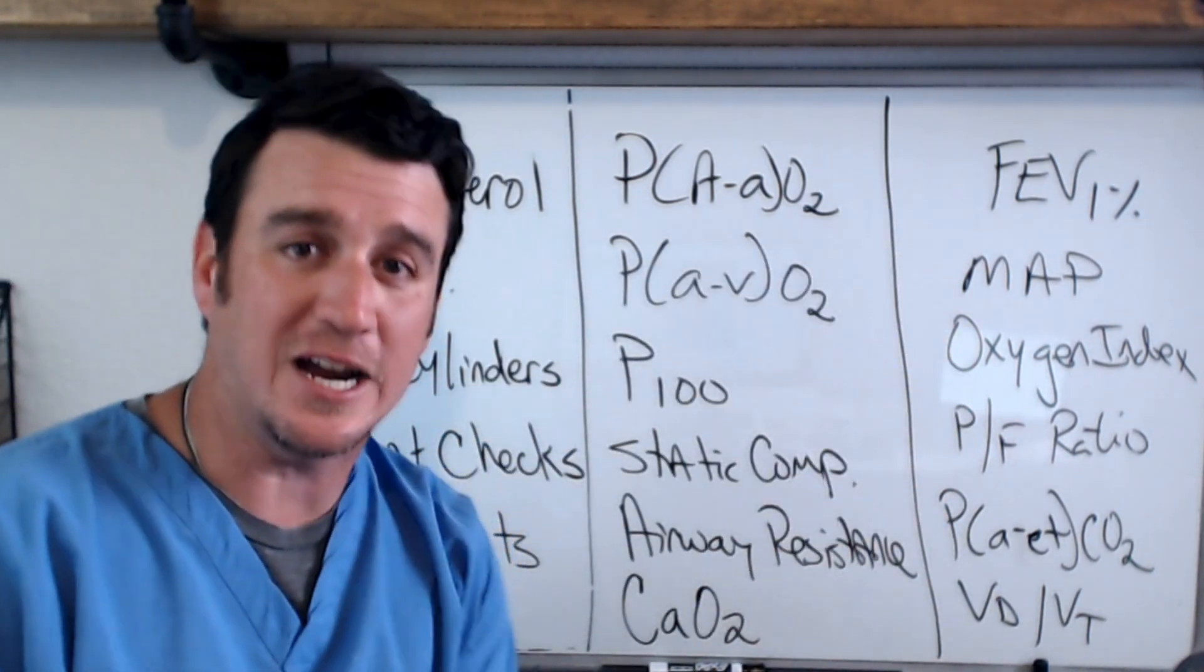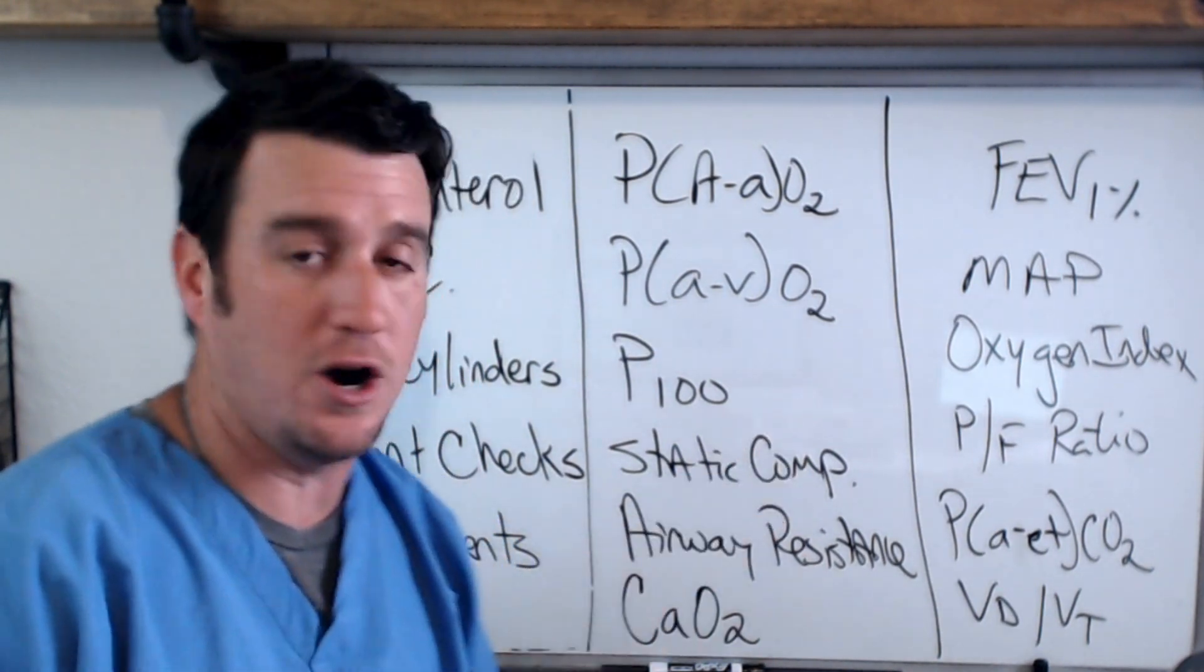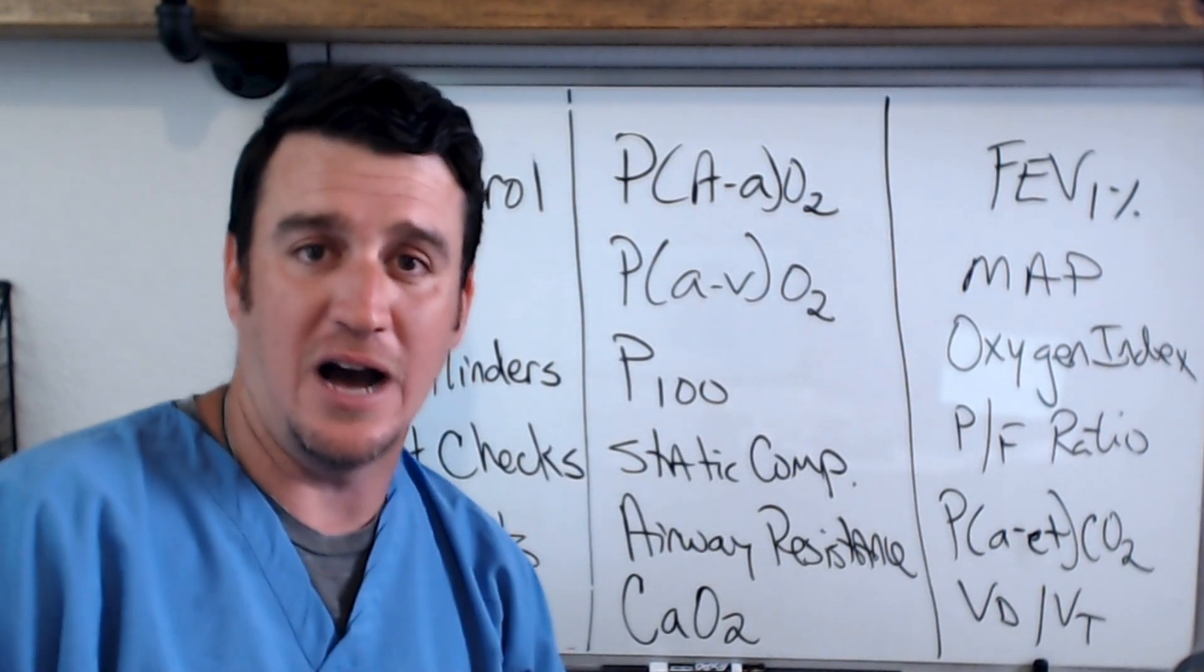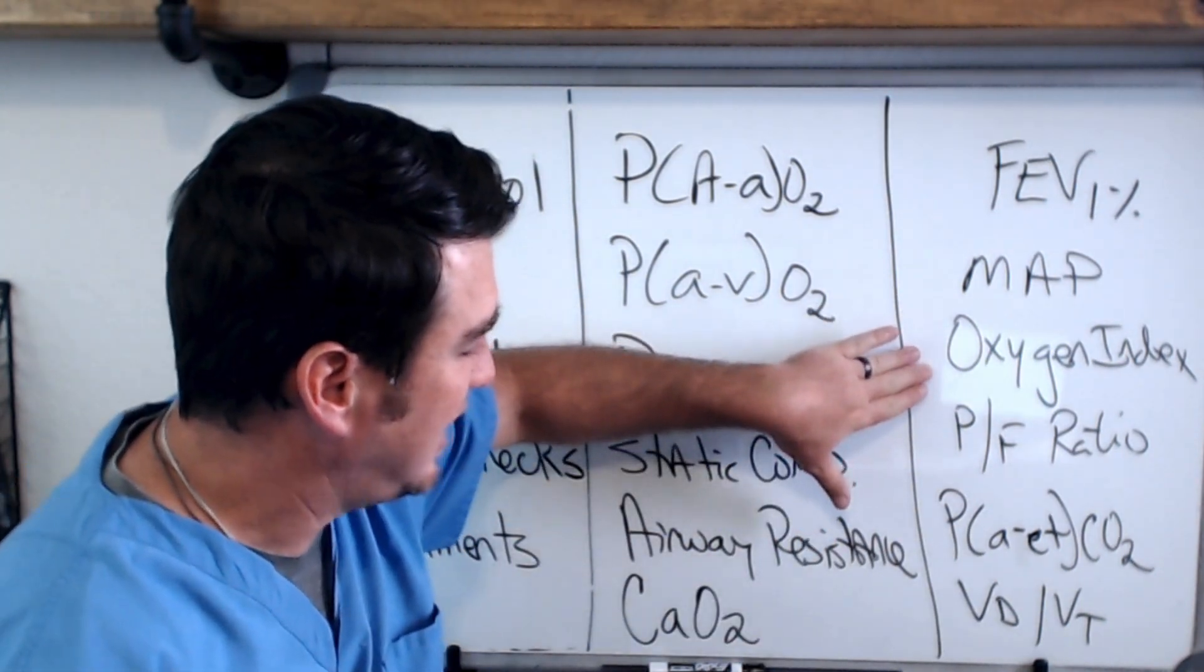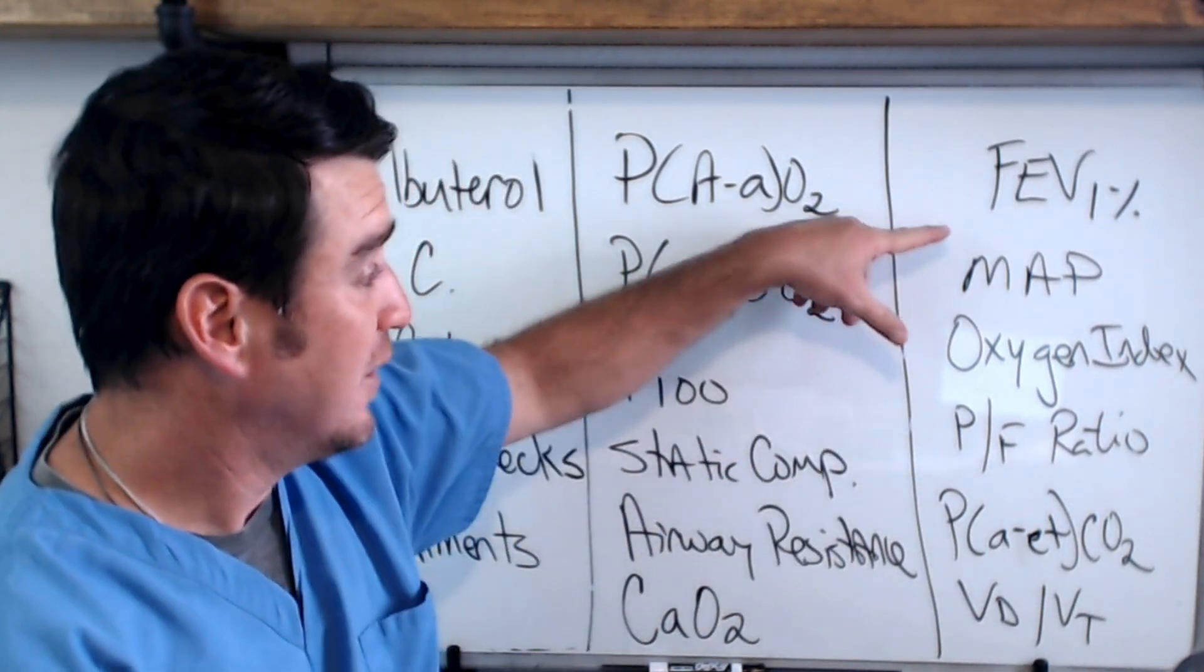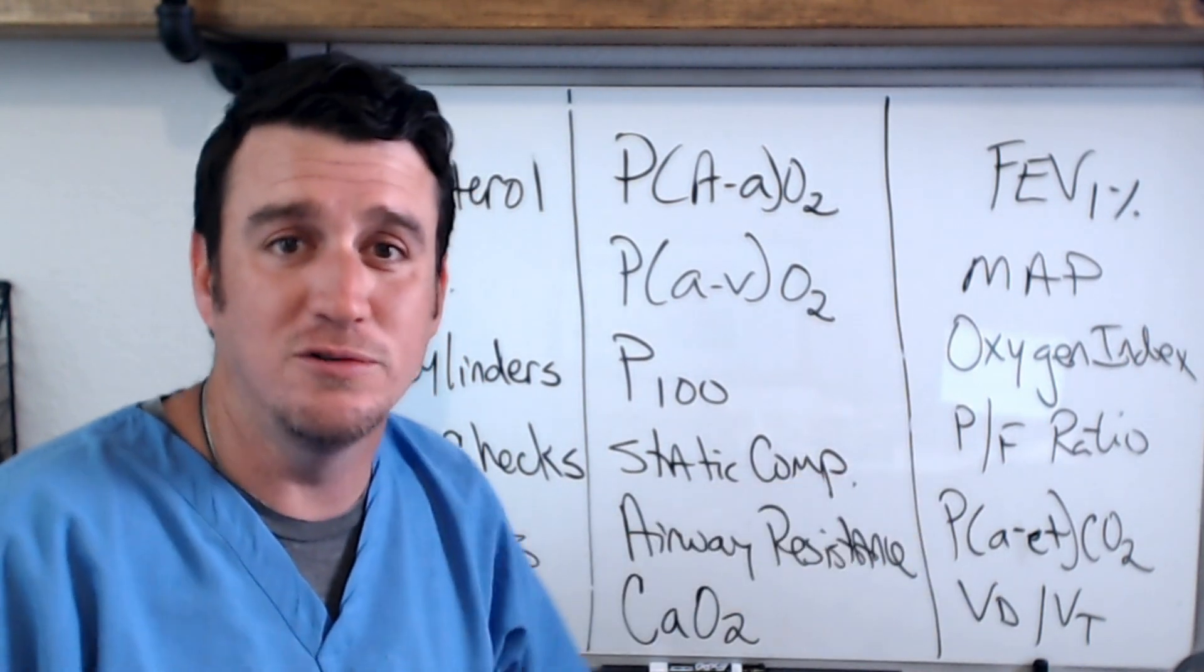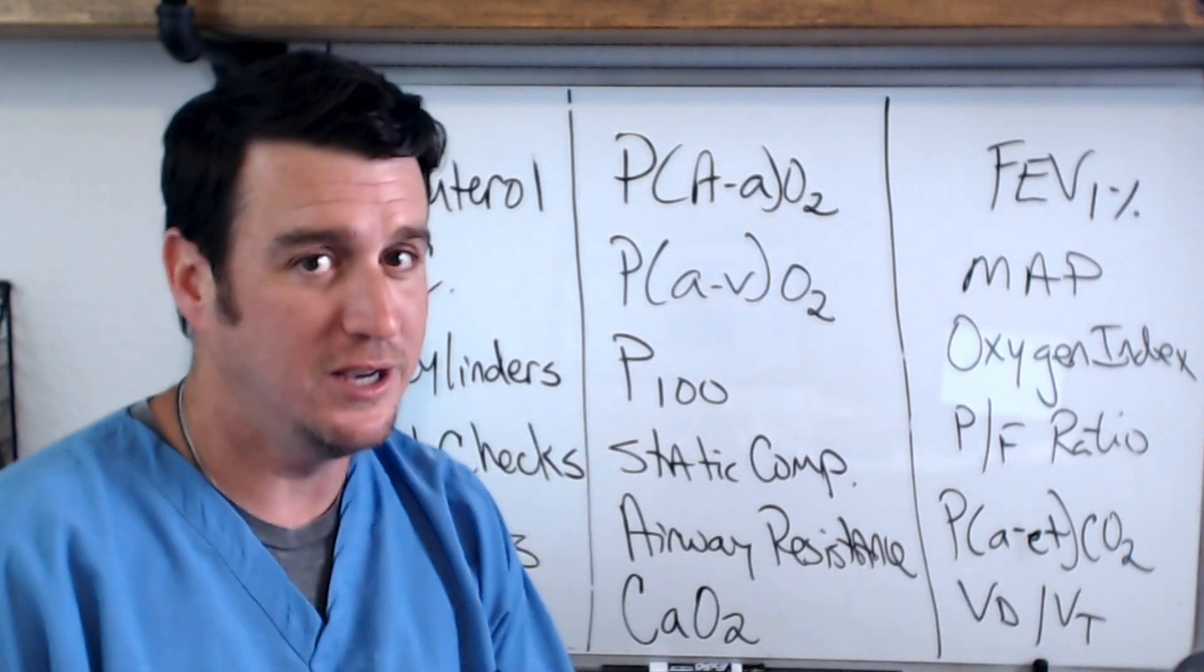Our FEV1%. Respiratory therapists can tell you the difference in an obstructive or restrictive lung disease and how we find it on a PFT. Mean airway pressure. We can tell you how to recruit and re-recruit alveoli to enhance oxygenation through mean airway pressure. We can talk to you about oxygen index and PF ratio and the difference between the two. Knowing that oxygen index brings into the formula mean airway pressure where PF ratio does not. So don't talk to me about PF ratio if we're using a mean airway pressure of 26 centimeters of water pressure to achieve that PF ratio. There's a different story there.